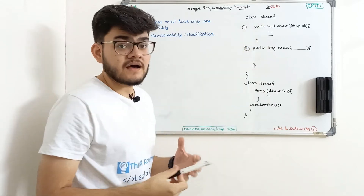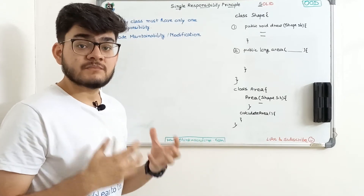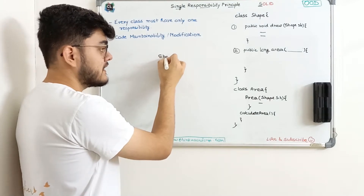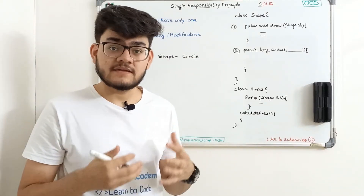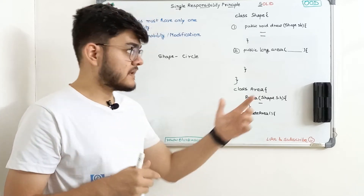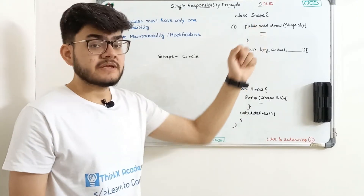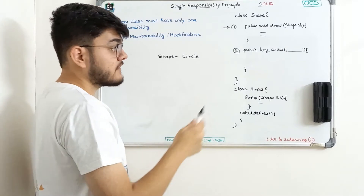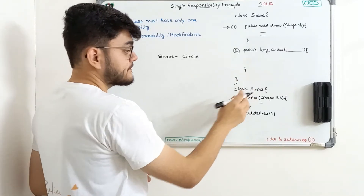Let's start with our first example. I've created a simple class called Shape. This class Shape is responsible for creating different types of shapes. Initially, a client comes to us and asks for only one feature: to draw a circle and calculate the area of that circle. So I have a public void draw function where I can pass the shape as circle and write the algorithm to draw it.